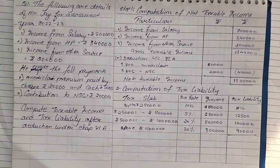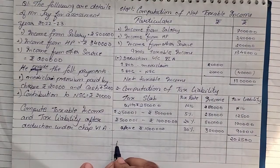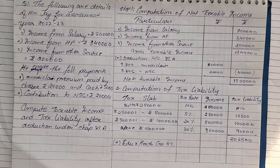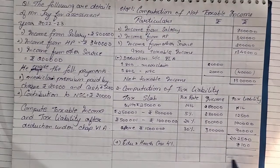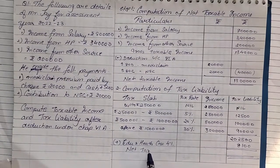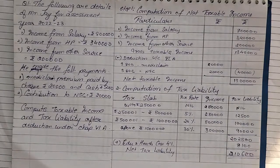Adding up: 12,500 plus 1 lakh plus 90,000 gives a gross tax liability of 2 lakh 2,500. We then add education and health cess at 4%: 2 lakh 2,500 × 4% = 8,100. Adding this to the gross tax liability, the net tax liability comes to 2,10,600. This is how we solve sums based on computation of tax liability.